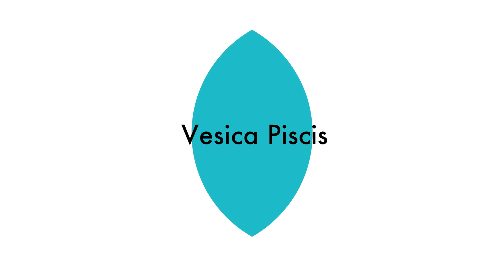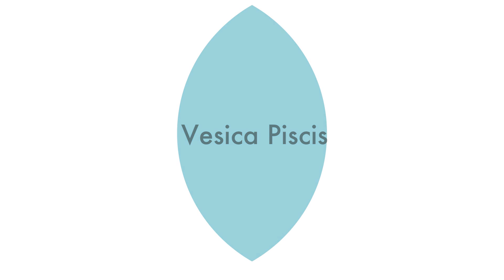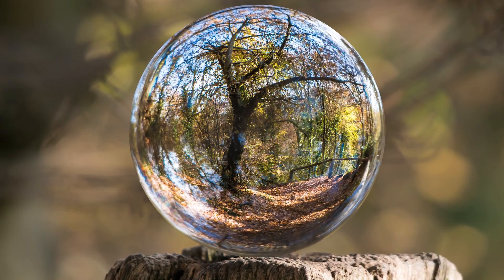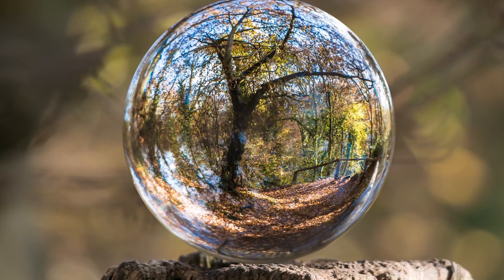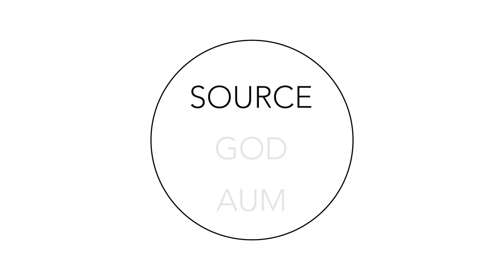I'm going to explain to you why this form is so important and how it came to creation. So we're going to start with a circle — just a plain, two-dimensional circle. This two-dimensional circle would be a sphere in three dimensions, but we're going to keep it 2D so we don't get things too complicated. This circle you can call either Source, God, Om, The One — whatever you want to call it. But I prefer to call it Source.